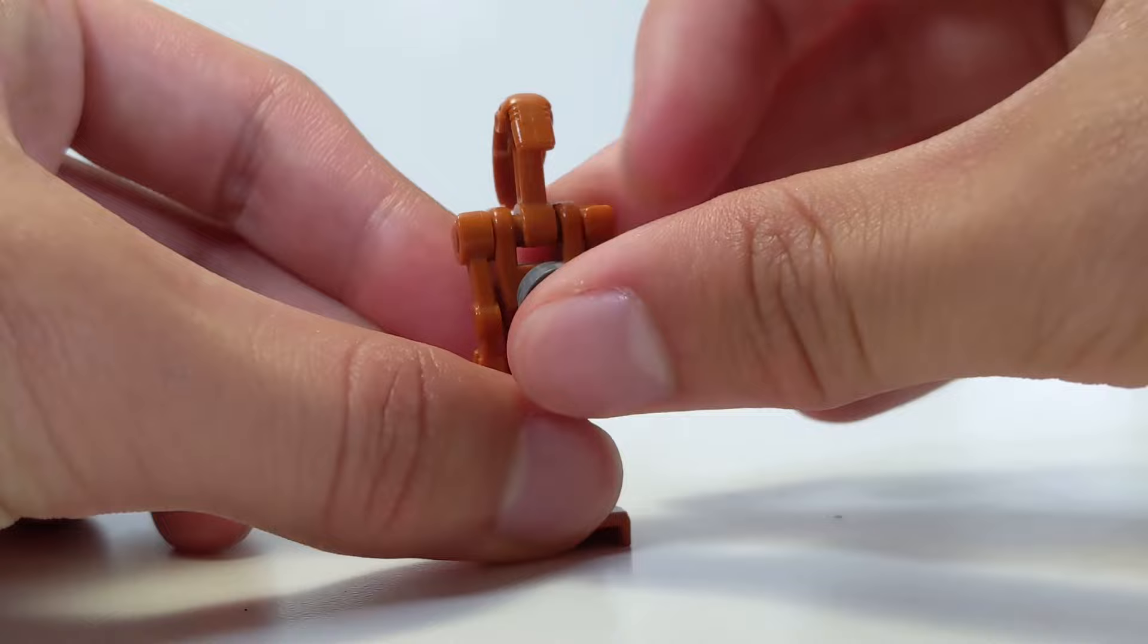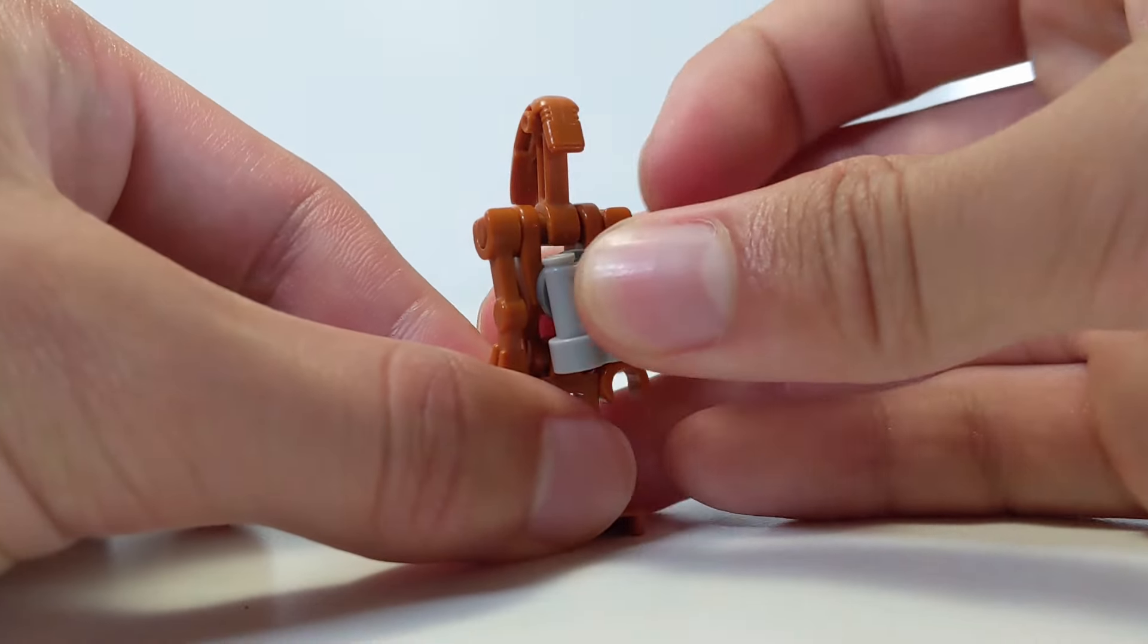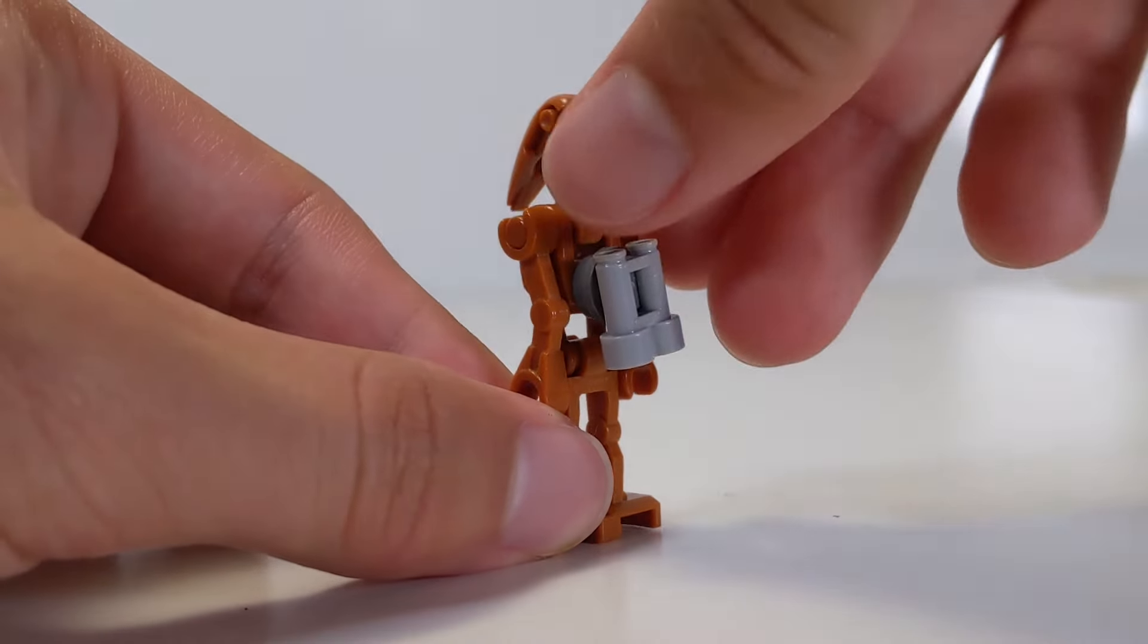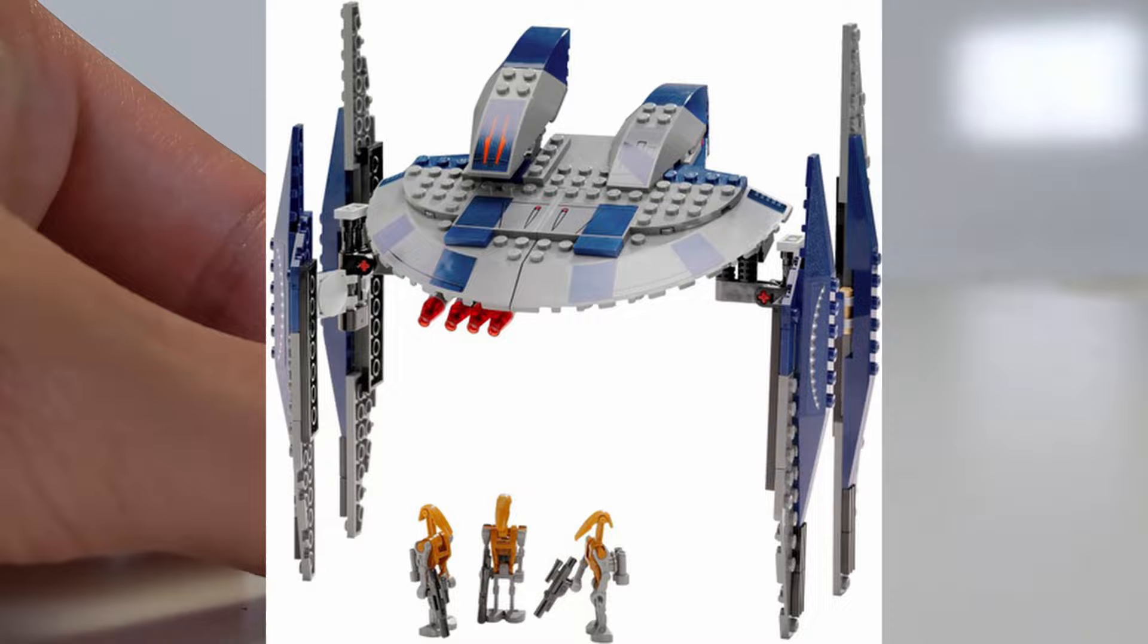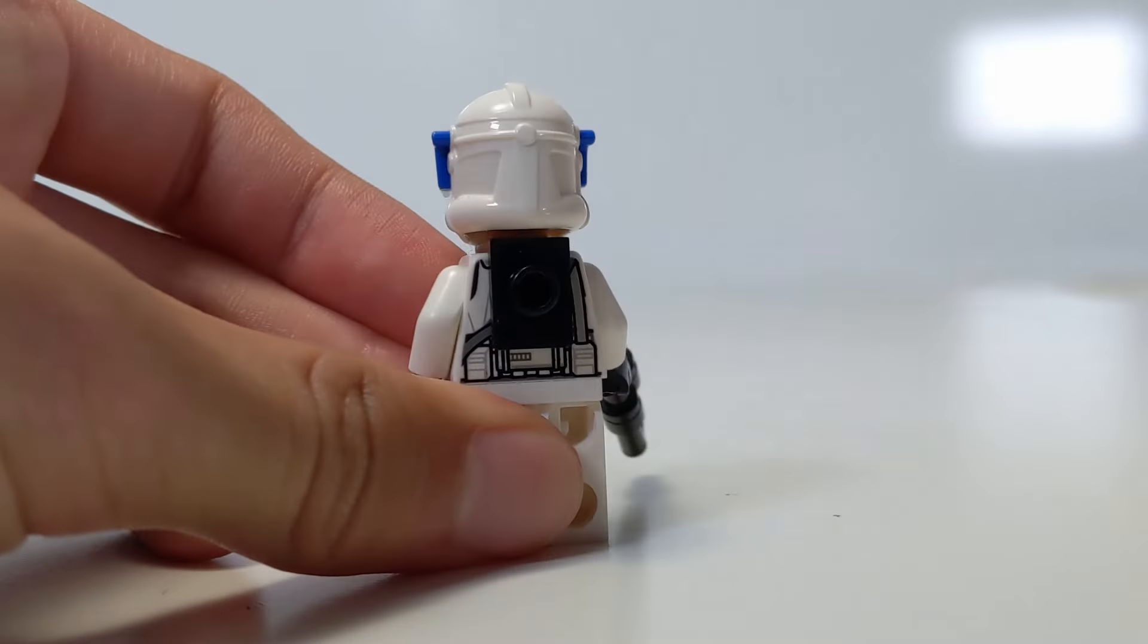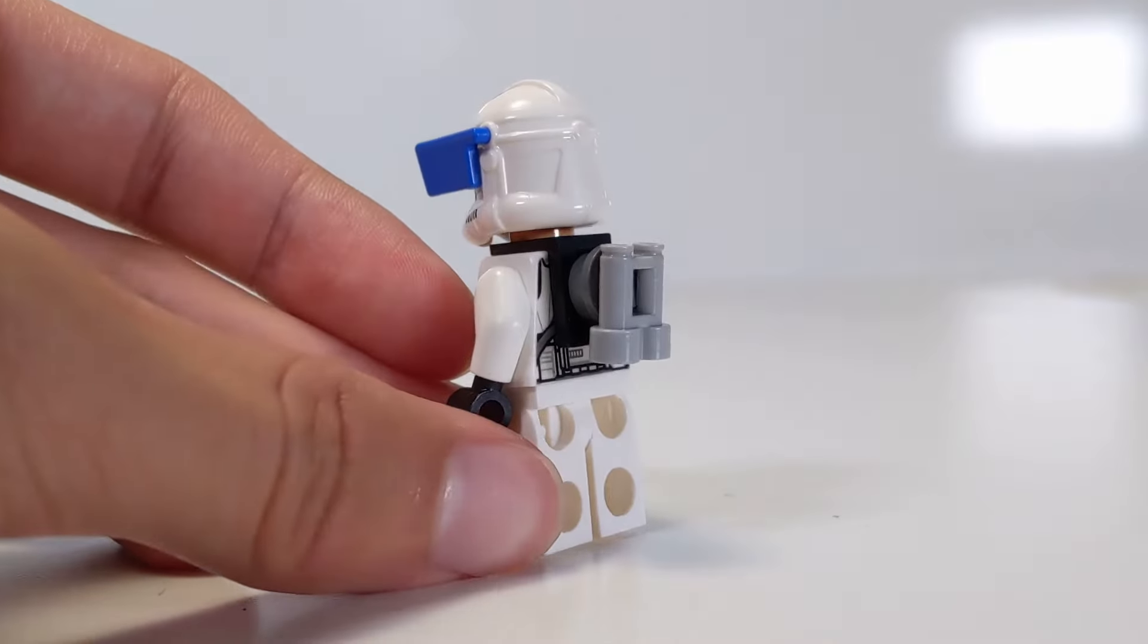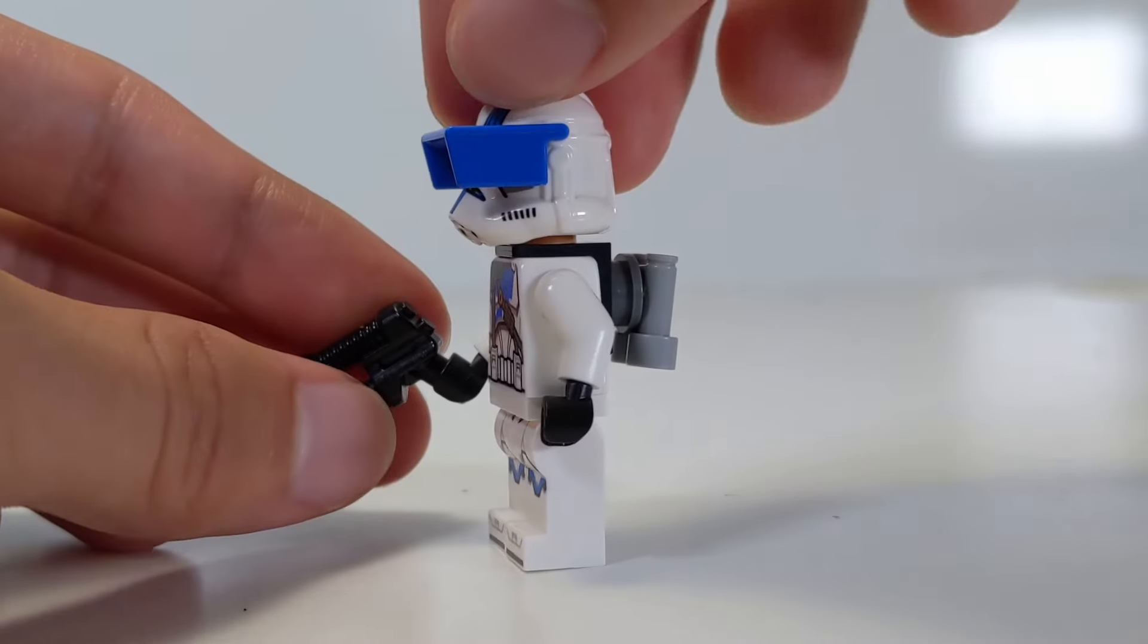Speaking of studs, if you add a stud to the end of a binocular piece, you can attach it to a battle droid's back, which is the exact design used in 2010 for the rocket droids. And if we take this exact same design, we can add it to a bracket piece to put it on a minifigure.